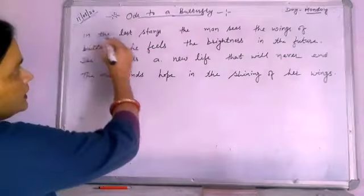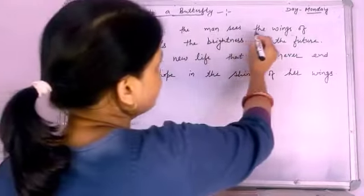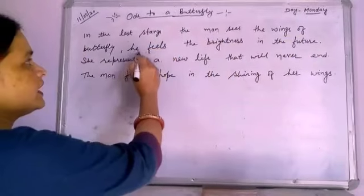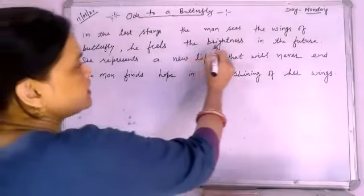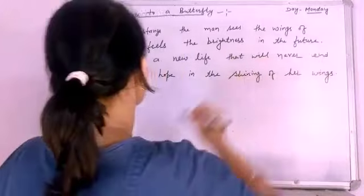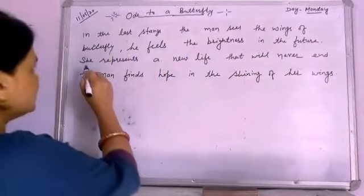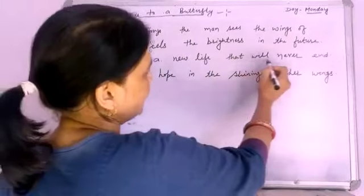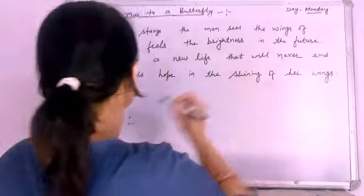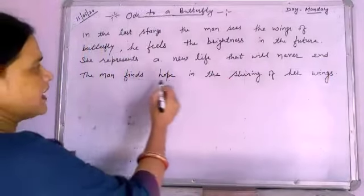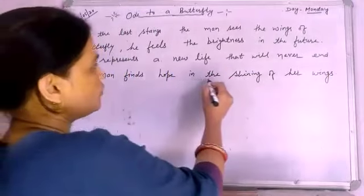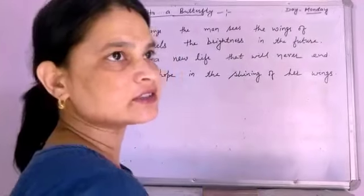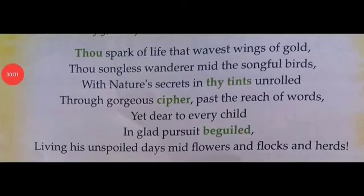In the last stanza, the man sees the wings of the butterfly. He feels the brightness in the future. She represents a new life that will never end. Man finds hope in the shining of her wings.